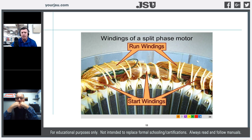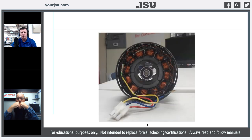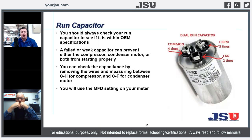Inside a permanent split capacitor motor, we have two windings: a run winding and a start winding assisting the run winding. As we move into ECM motors, we don't have to worry about that — we're using a true three-phase motor. When looking at capacitors, one thing we can identify is that the common terminal typically has four tines, the Herm terminal (compressor) has three tines, and the fan side (condenser fan motor) has two tines.